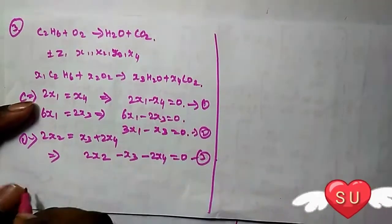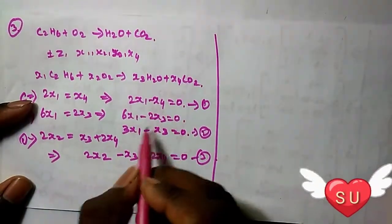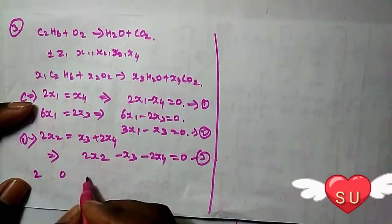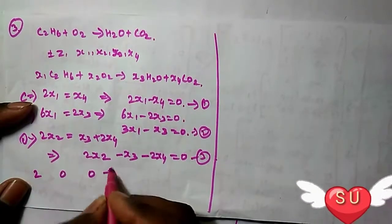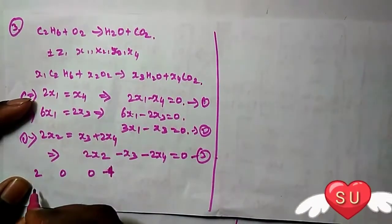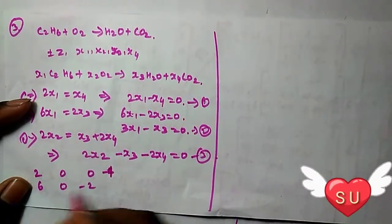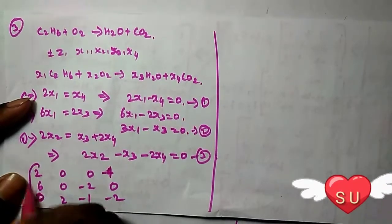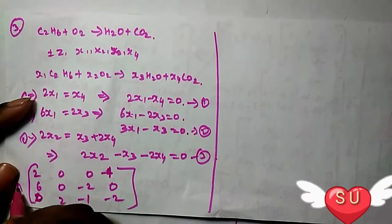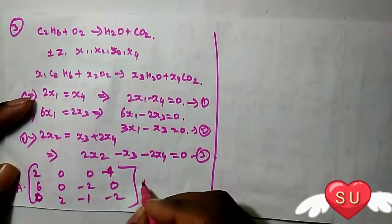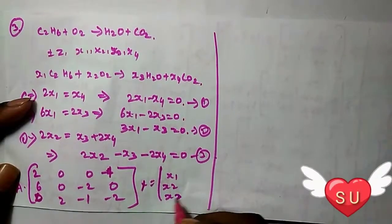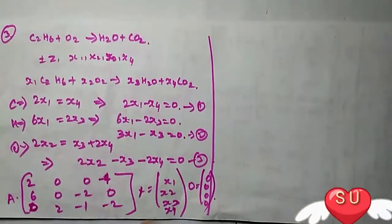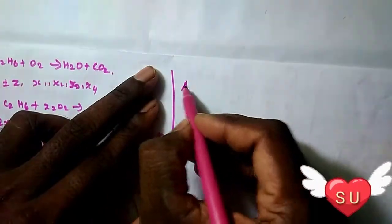We use the matrix form Ax equals 0. The coefficient matrix is: 2 0 0 -1 for x1 to x4, then 6 0 -2 0, then 0 2 -1 -2. All equal to 0.